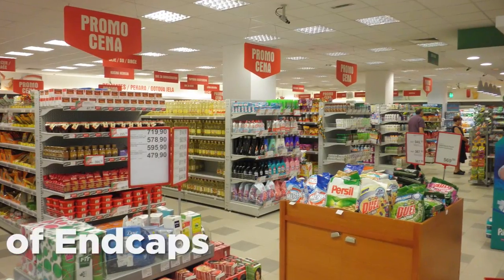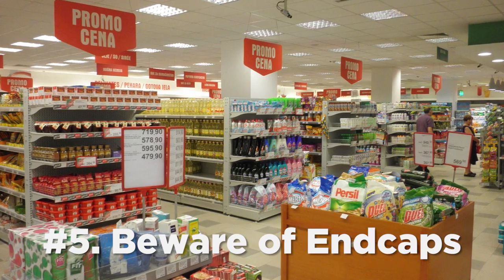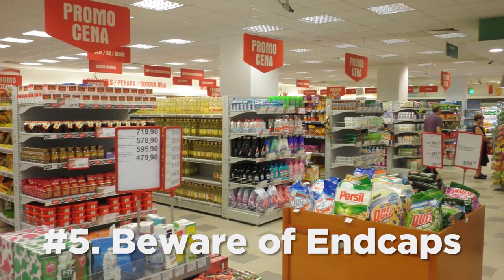And you can't fully escape the clutches of the middle aisle just from going around the outer ring because there's such things as end caps and end caps are set up because they know that there's people like us and now like you who know to just stick to the outer ring and they're like you're not going to get away that easily. Look at all these wonderful snack cakes. You just have to basically walk like this through the grocery store.